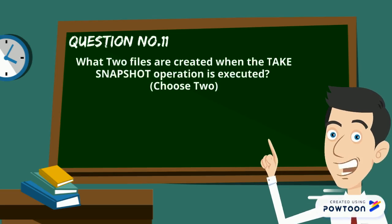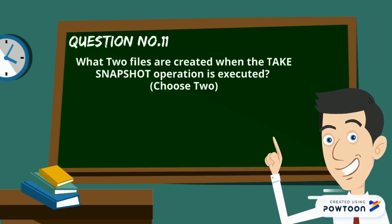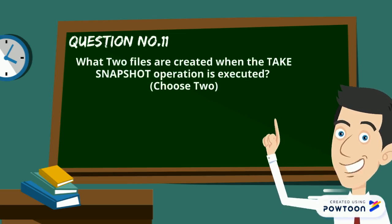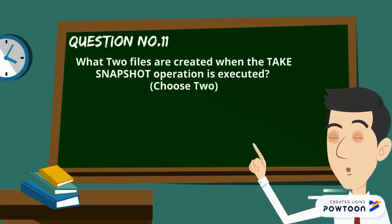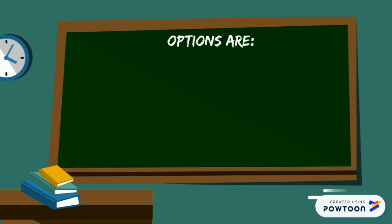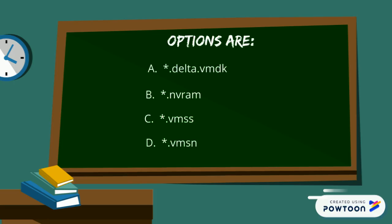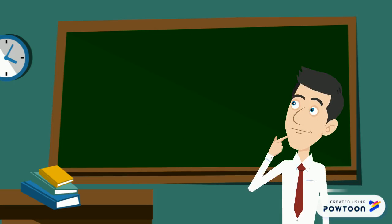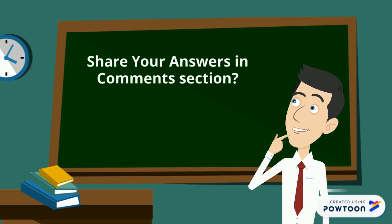Here is question number 11: What two files are created when the take snapshot operation is executed? Choose two. Options are: delta.vmdk, nvram, vmss, and vmsn. Share your answers in the comment section or watch our next video to know the answer.